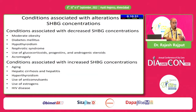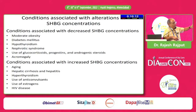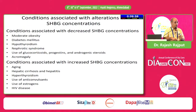Coming to SHBG — sex hormone binding globulin — this is the major globulin binding testosterone in plasma. Only 4 to 6% of testosterone is free. There are medical conditions that either increase or decrease SHBG. Obesity, diabetes, and hypothyroidism are all associated with a decrease in SHBG. So if you are measuring total testosterone in these patients, it may be falsely low, while bioavailable testosterone might actually be normal.